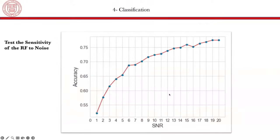And finally, I wanted to test the sensitivity of the random forest to noise. So even if our initial signal already contains noise, but I wanted to add some noise to it. So here we have the signal-to-noise ratio in the x-axis. And we have the accuracy of the random forest in the y-axis. And we can see an increase in the accuracy with an increasing signal-to-noise ratio. And these values converge to 0.8, which is approximately the accuracy without any noise.